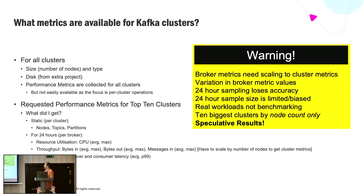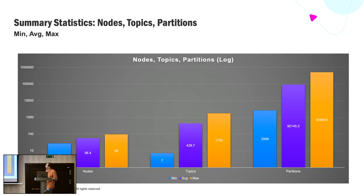For the top 10 clusters, I got static data including number of nodes, topics, and partitions. Then for a 24-hour period, per-broker resource utilization, throughput, and latency. The data turned out to be not particularly easy to interpret or accurate, and the results are therefore speculative. Topics ranged from 7 to 17,000 per cluster. Partitions ranged from about 2,500 up to half a million. CPU utilization ranged quite dramatically from quite low to quite high.